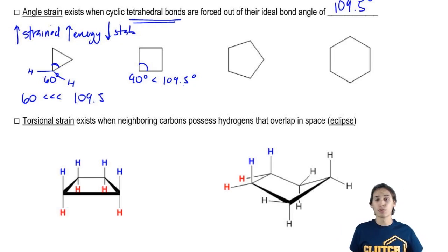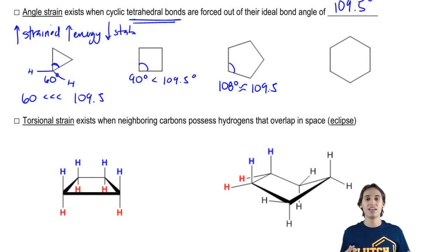Now a five-membered ring is getting a lot closer to what we want. A five-membered ring will have bond angles of 108, and 108 is almost the same as 109.5. There's almost no difference there. So in terms of angle strain, a five-membered ring cyclopentane has very little angle strain. Are you guys cool with that? It's almost perfect.